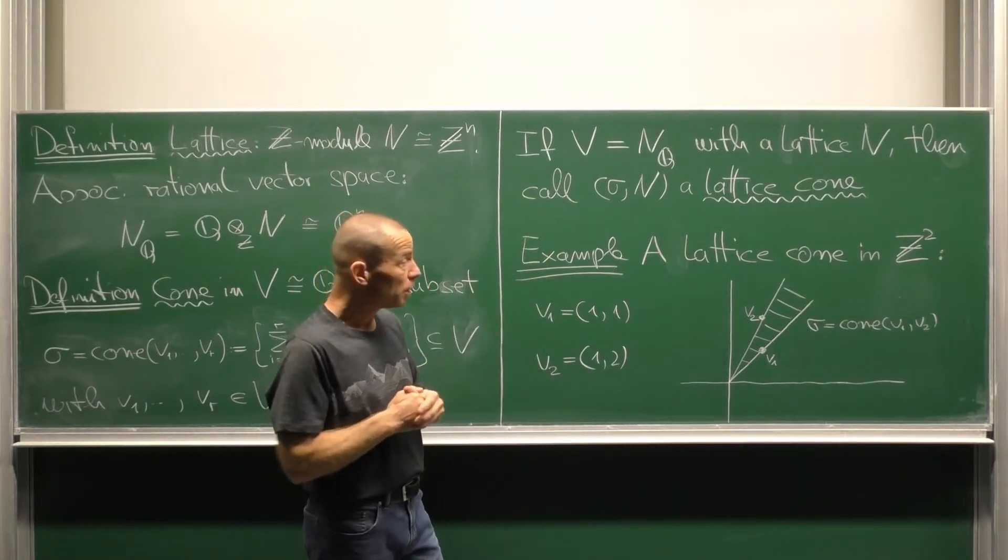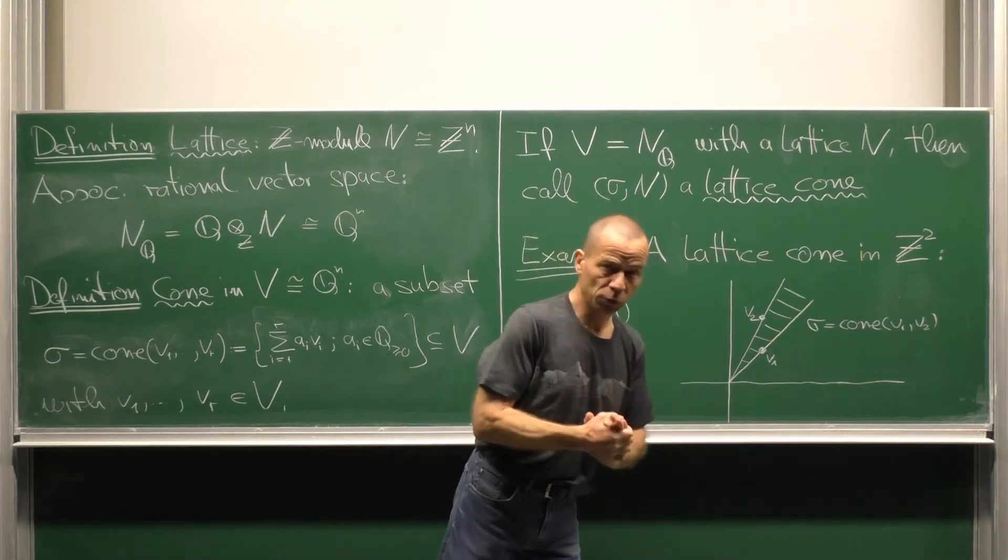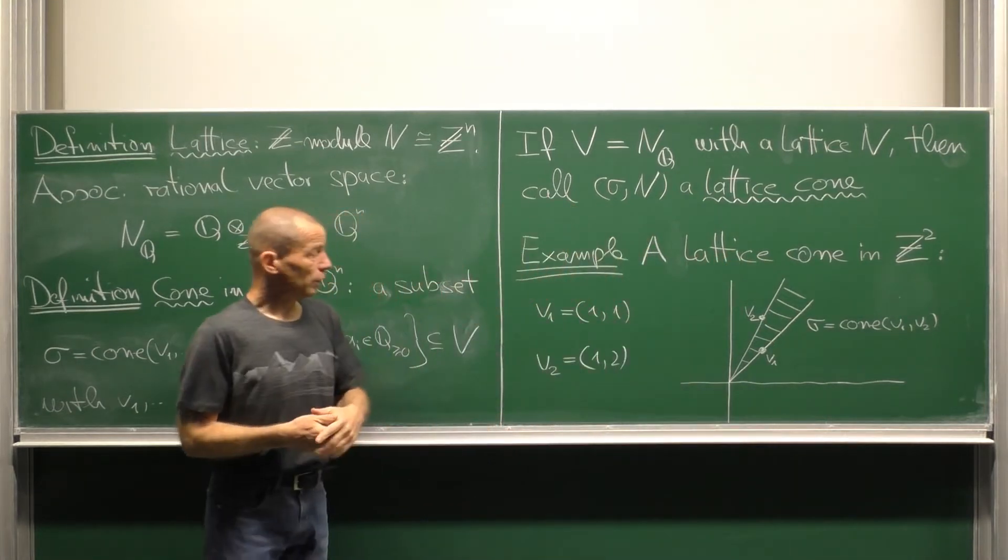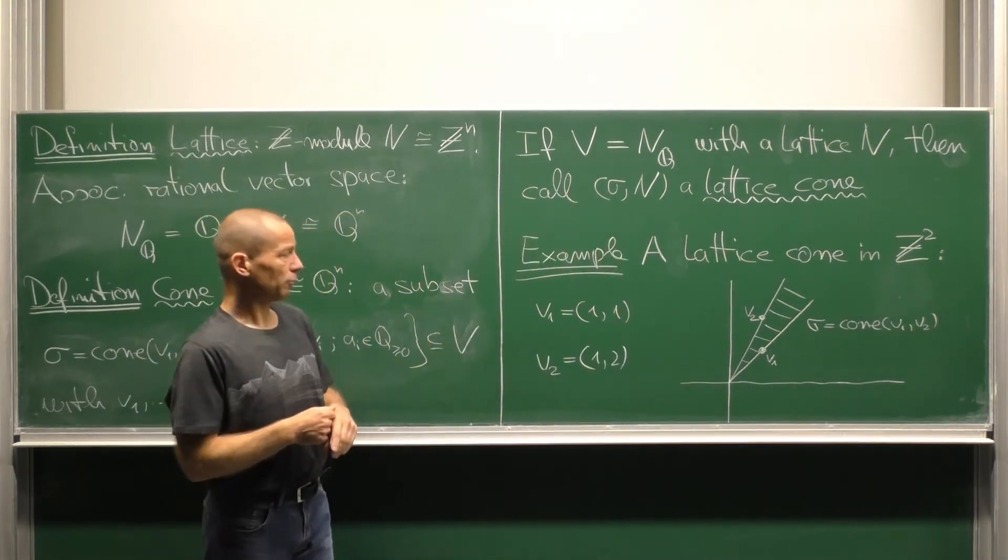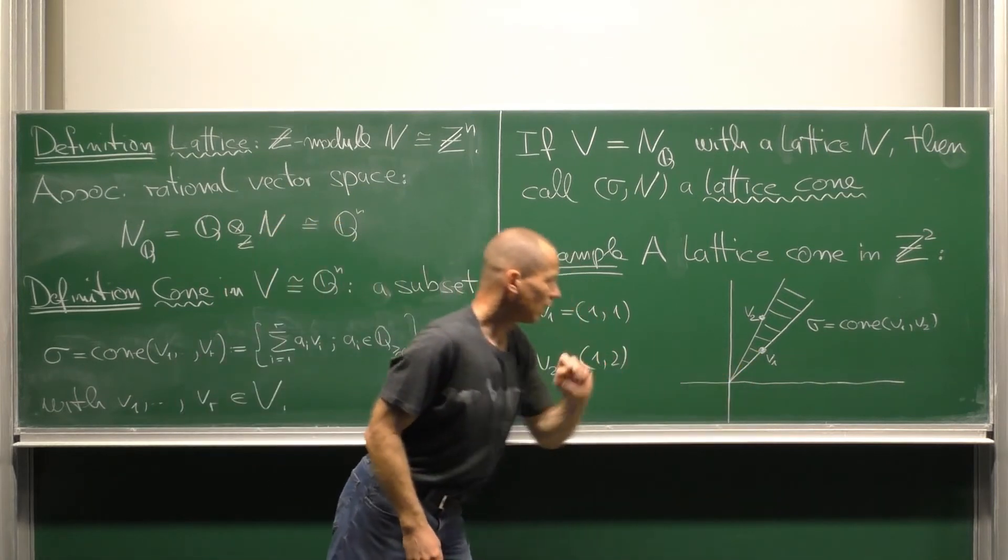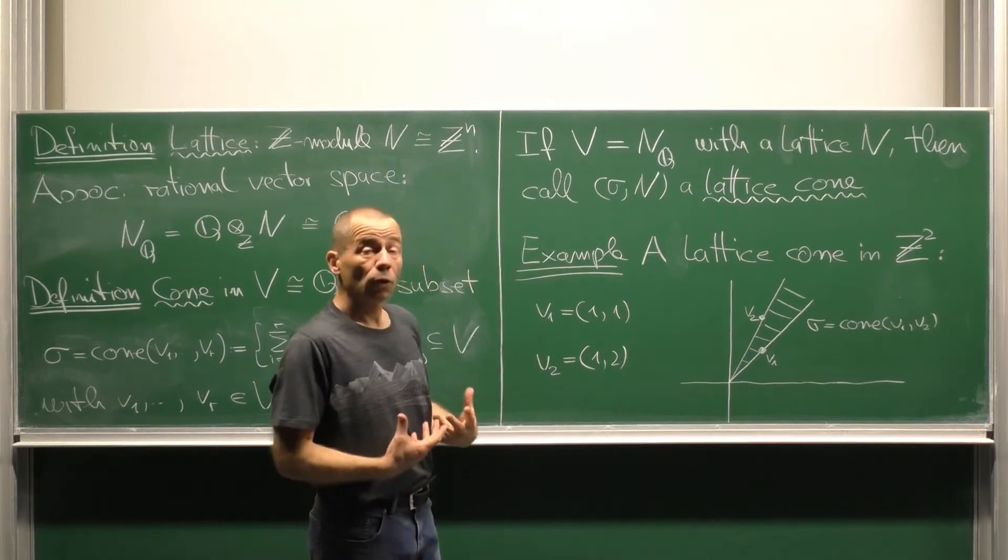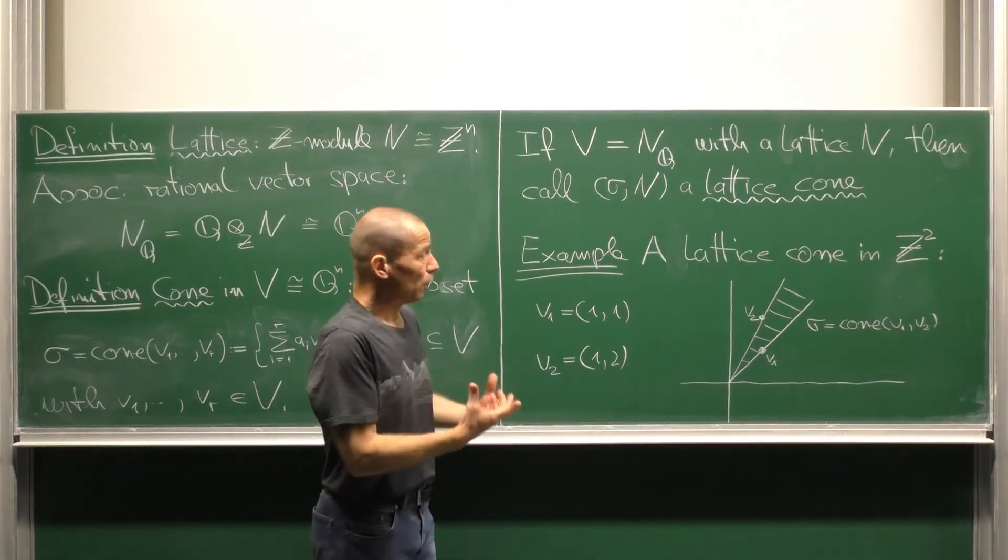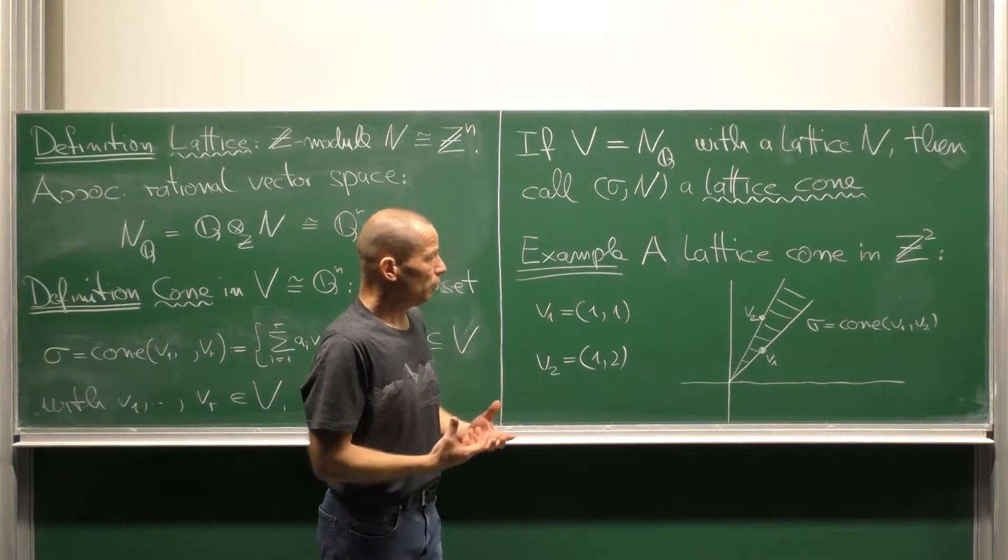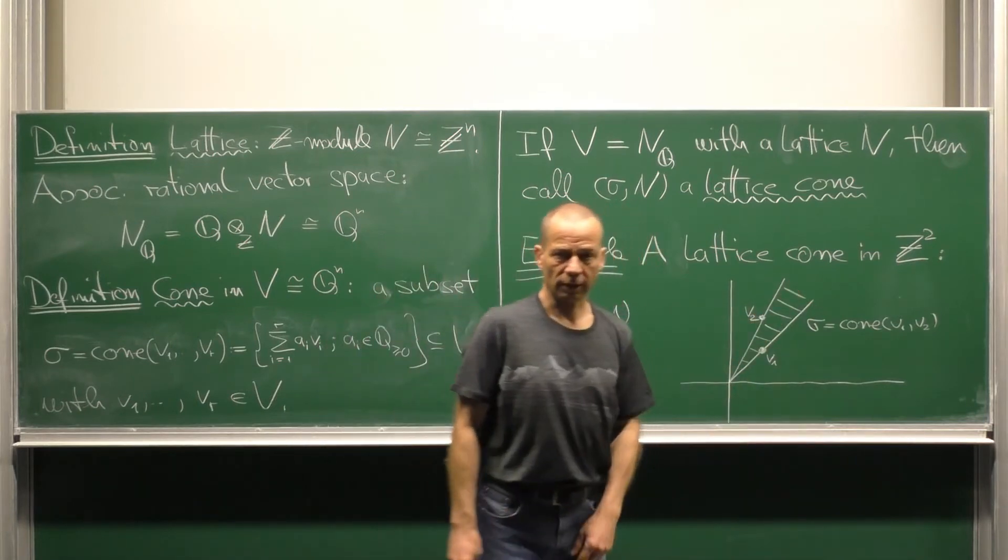Let us see an example. A lattice cone in Z2. Look at the vectors v1 equal (1,1), v2 equal (1,2), then the cone sigma over v1 v2 is just this set here.